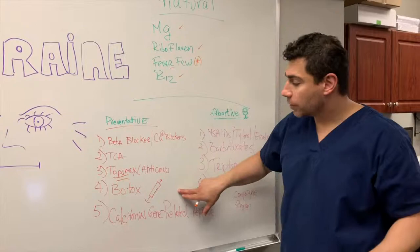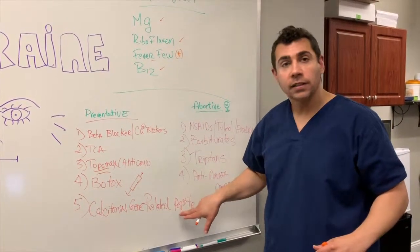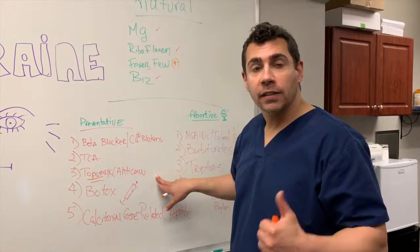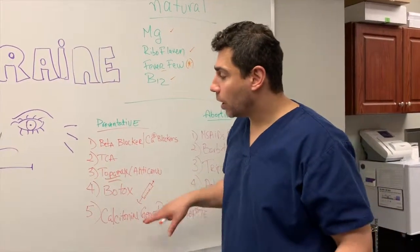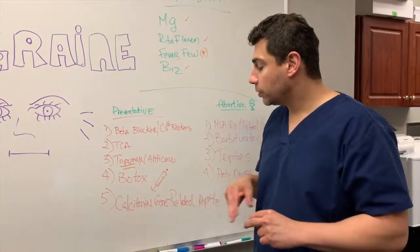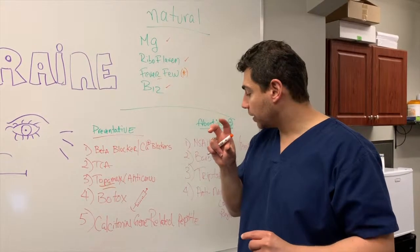And then the newest generation of medication called calcitonin gene related peptides. These are monoclonal antibodies. There's three on the market right now: Aimovig, Emgality, and Ajovy, three of which can help you reduce your number of migraines per month using a new technology using monoclonal antibodies and calcitonin gene related peptide.